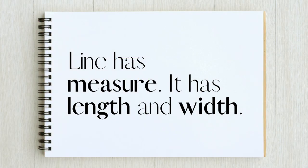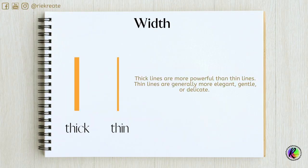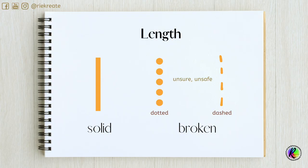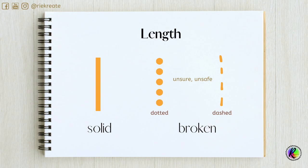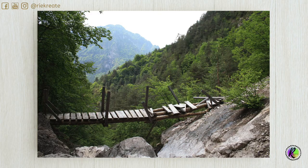Line has measure — it has length and width. There are long lines and short lines, thick and thin lines. Thick lines are more powerful than thin lines. Thin lines are generally more elegant, gentle, and appear more delicate. A line can also be solid or broken. Broken lines have spaces or gaps; they can be dotted or dashed. Broken lines tend to feel unsure and unsafe.